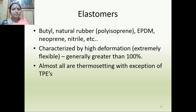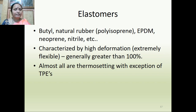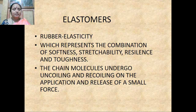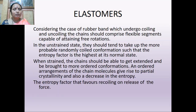Coming to elastomers — common examples include butyl rubber, natural rubber (polyisoprene), EPDM, neoprene, and nitrile rubber. Elastomers are characterized by high deformation and are extremely flexible, generally greater than 100% elongation. Almost all are thermosetting, with exceptions of thermoplastic elastomers (TPE). Rubber elasticity represents the combination of softness, stretchability, resilience, and toughness. The chain molecules undergo uncoiling and recoiling on the application and release of a small force.